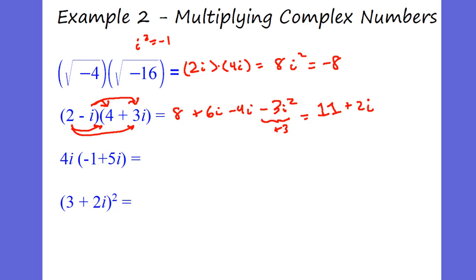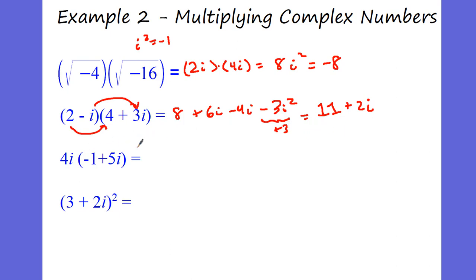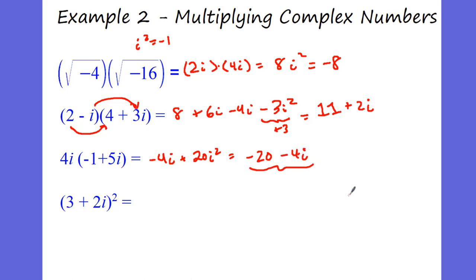Anytime you do this foiling on imaginary numbers, the first and the last in your foiling are going to give you real numbers because you're going to have i squared. The middle numbers are going to give you your imaginary numbers. Here we're distributing, so we have 4i times negative 1, that's negative 4i. We have 4i times 5i, that's 20i squared. What's 20i squared? That's negative 20 because i squared is negative 1. We have minus 4i — always put the imaginary number behind — that is in standard form.